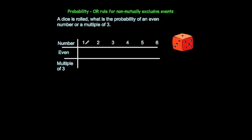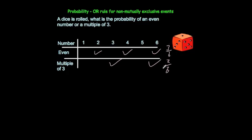They can happen at the same time — you can get an even number that is also a multiple of 3 when you roll a dice, namely 6. The even outcomes are 2, 4, and 6; multiples of 3 are 3 and 6. Even gives 3 out of 6, multiples of 3 give 2 out of 6. If we used the mutually exclusive method, we'd add those to get 5 out of 6 — but that's wrong. The numbers that are even or a multiple of 3 are 2, 3, 4, and 6, so the answer is 4 out of 6.